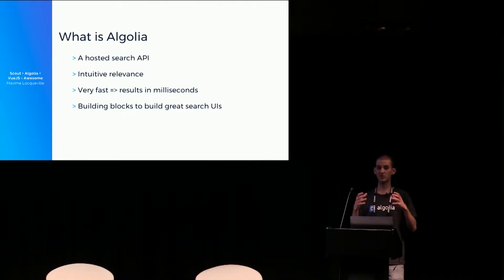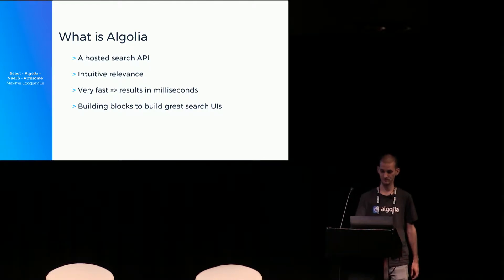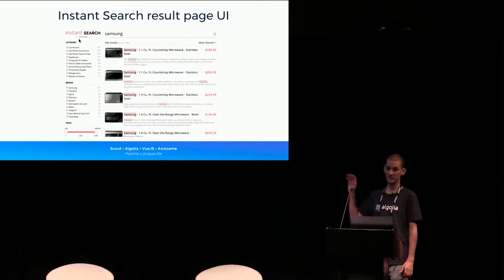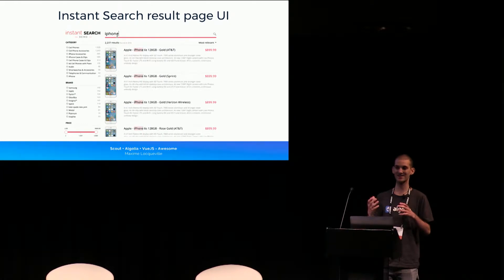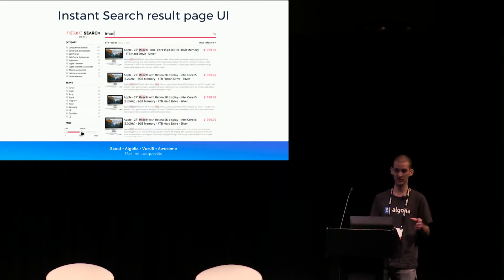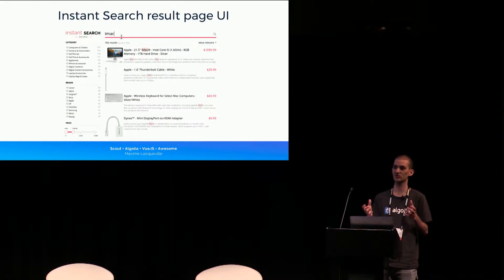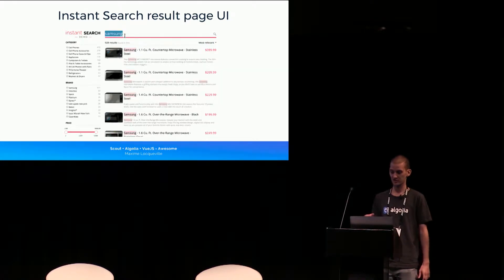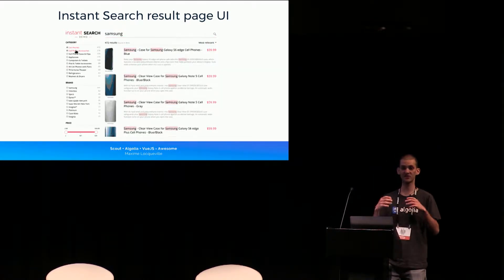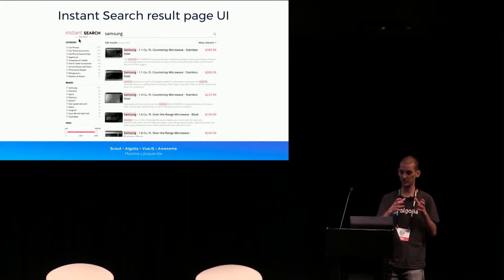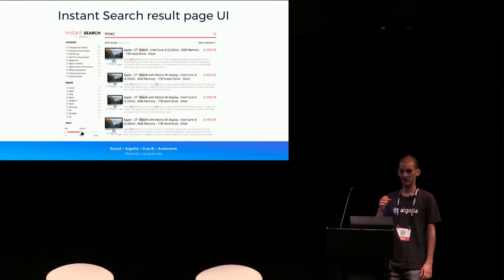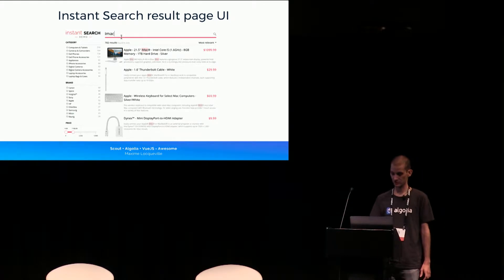On top of this API, we provide a lot of building blocks to easily display and build search UIs. One of the UIs you can build is an instant search results page — it looks like a classic search with an input, results, and some filtering on the left. That's the kind of thing you find in e-commerce search and other websites. The main difference is that everything you type and every refinement you make refreshes the whole UI — every keystroke, every filter — and it's instant.